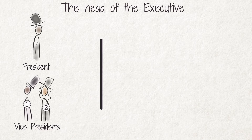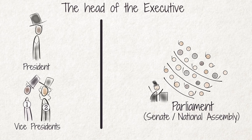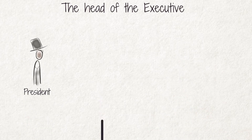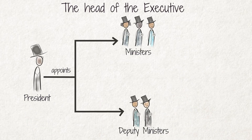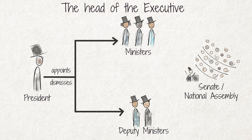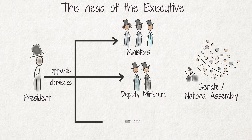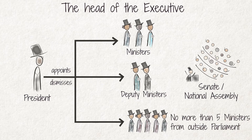Neither the president nor the vice presidents are members of parliament. The president appoints the ministers and deputy ministers, decides what each one's powers and functions are, and may dismiss them at his or her discretion. The president chooses his or her cabinet from the members of the Senate or the National Assembly, but may select no more than five ministers from outside parliament.